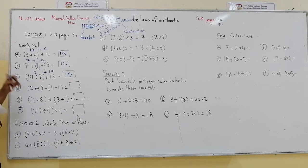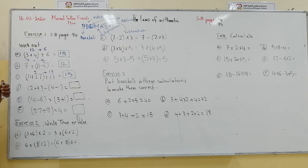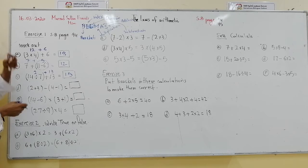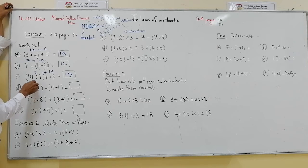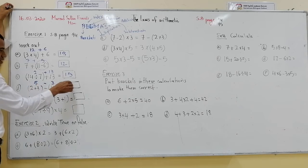The next one: (2 plus 3) minus (4 minus 1). I calculate the sum inside the first brackets, then the difference inside the second brackets, then subtract. 2 plus 3 is 5. 4 minus 1 is 3. So 5 minus 3 is 2.